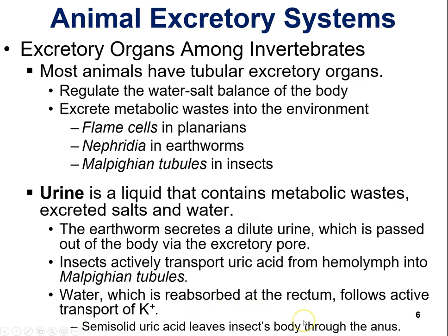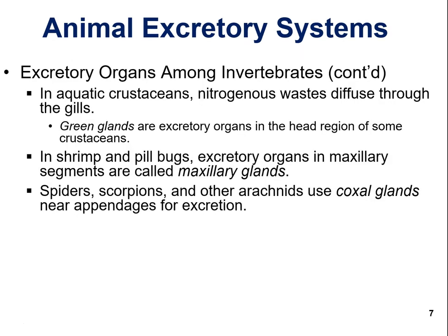Semi-solid uric acid leaves the insect's body through the anus because water gets reabsorbed there, and whatever doesn't get reabsorbed exits that way. For aquatic crustaceans like crabs, nitrogenous waste diffuses through the gills. The green glands visible when opening a crab are the excretory organs in the head region of some crustaceans.